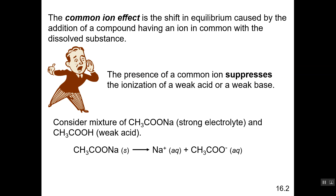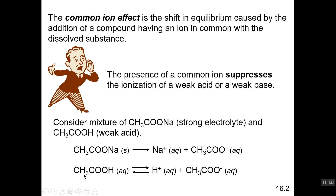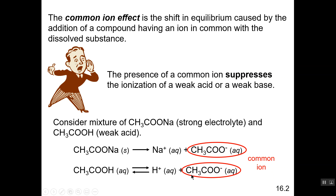In this example, we have a mixture of sodium acetate, which is a strong electrolyte, and acetic acid, which is a weak acid. Because sodium acetate is a strong electrolyte, it will undergo complete dissociation, so you'd expect a high concentration of acetate ion present in solution. In the case of acetic acid, because its dissociation is weak, the concentration of acetate is very low. The common ion — the acetate ion — is produced by both, and the presence of this large amount of acetate ion will result in the equilibrium shifting to the left, reducing the extent of dissociation of acetic acid.